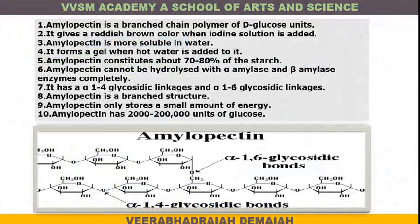Amylopectin is a branched-chain polymer of D-glucose. It gives a reddish-brown color when iodine solution is added. Amylopectin is more soluble in water and forms a gel when hot water is added. It constitutes about 70 to 80 percent of starch. Amylopectin cannot be fully hydrolyzed by alpha amylase and beta amylase enzymes because it has both 1,4 and 1,6 glycosidic linkages. Amylopectin has 2,000 to 200,000 glucose units in its structure.